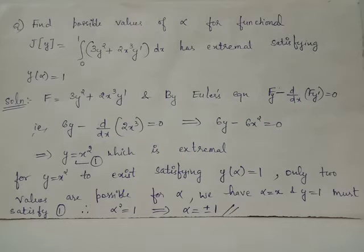Find possible values of alpha for the functional J(y) equals integral from 0 to 1 of (3y² + 2x³y') dx that have an extremal satisfying the condition y(α) = 1.